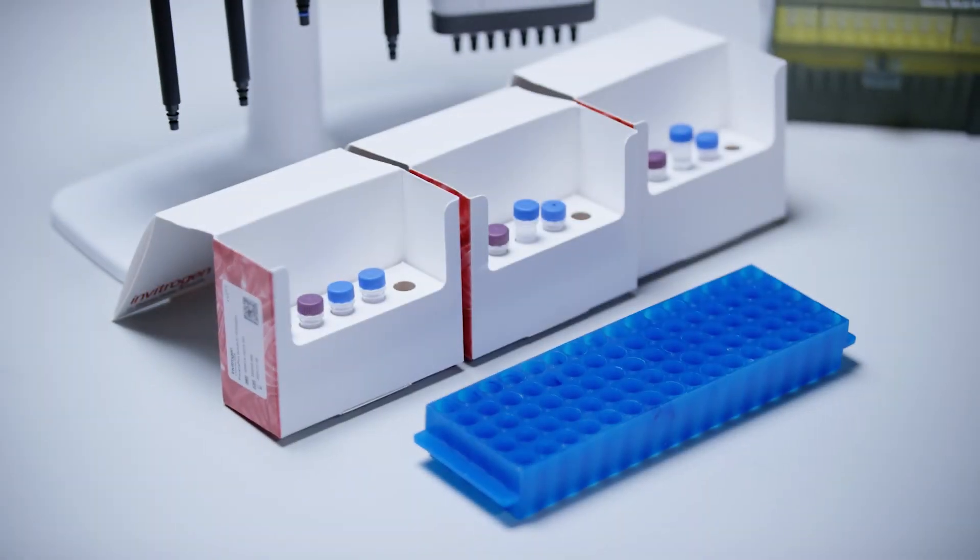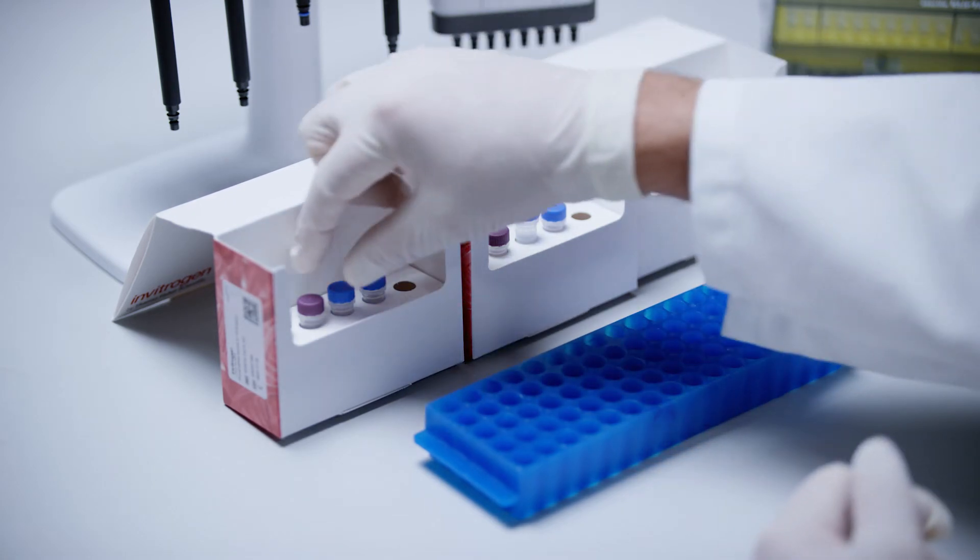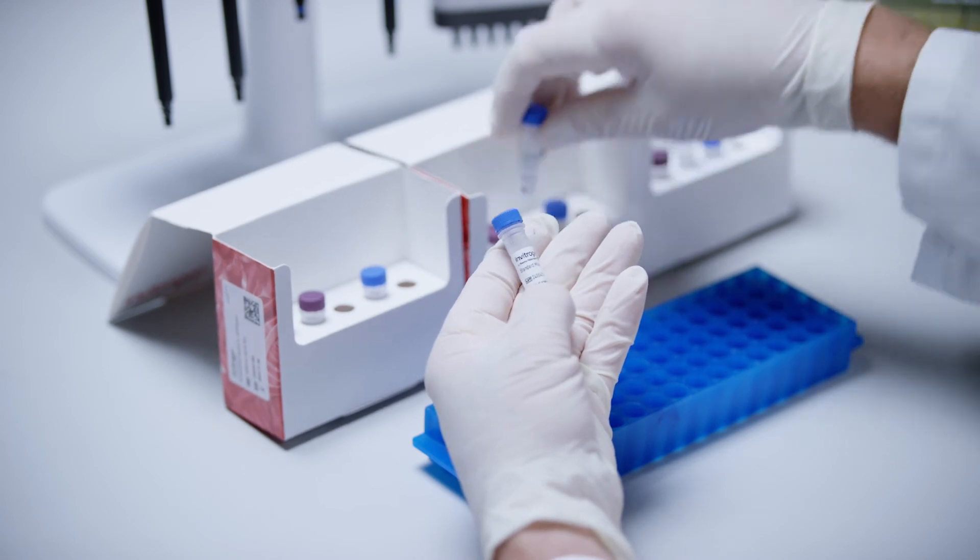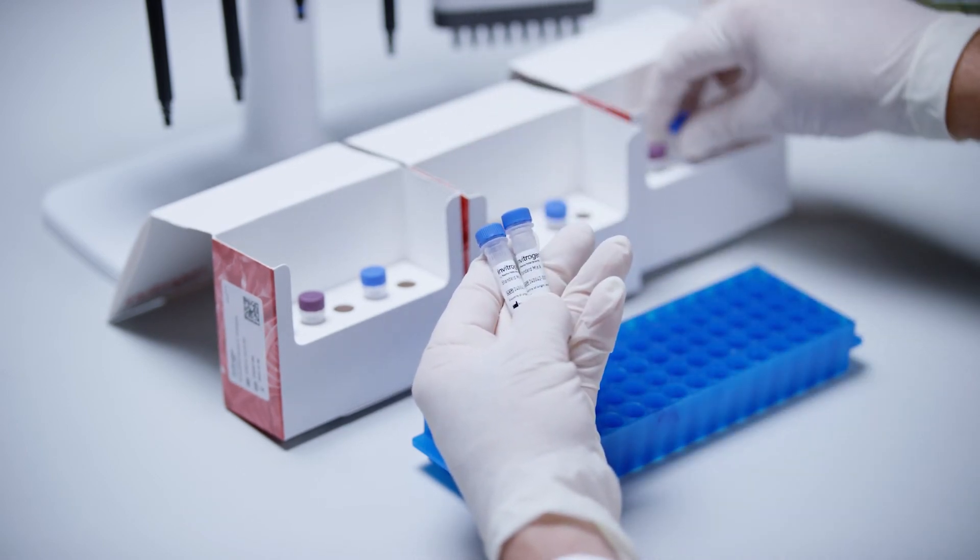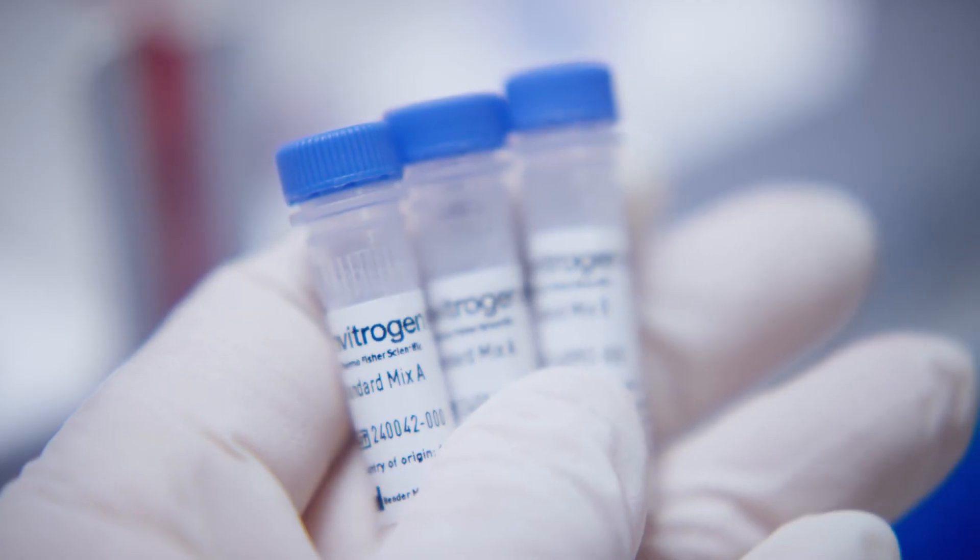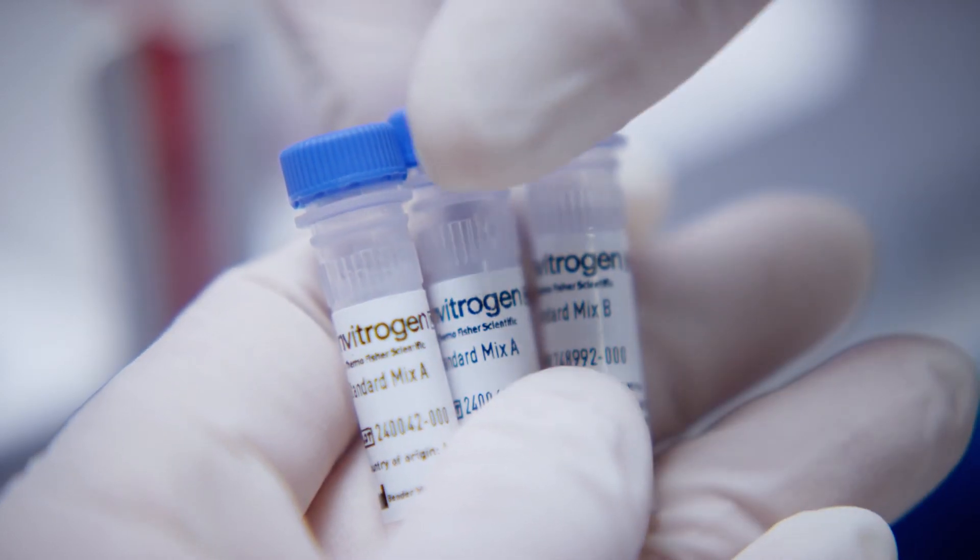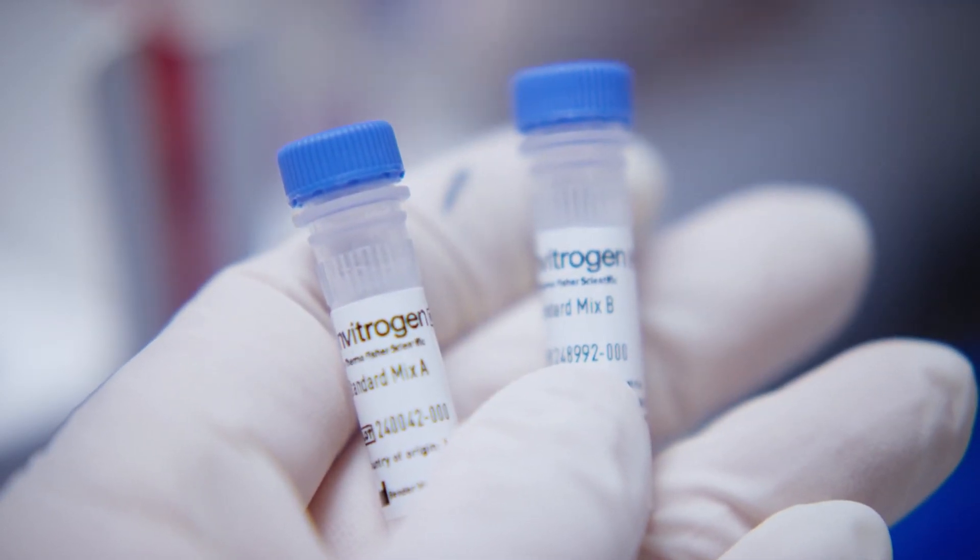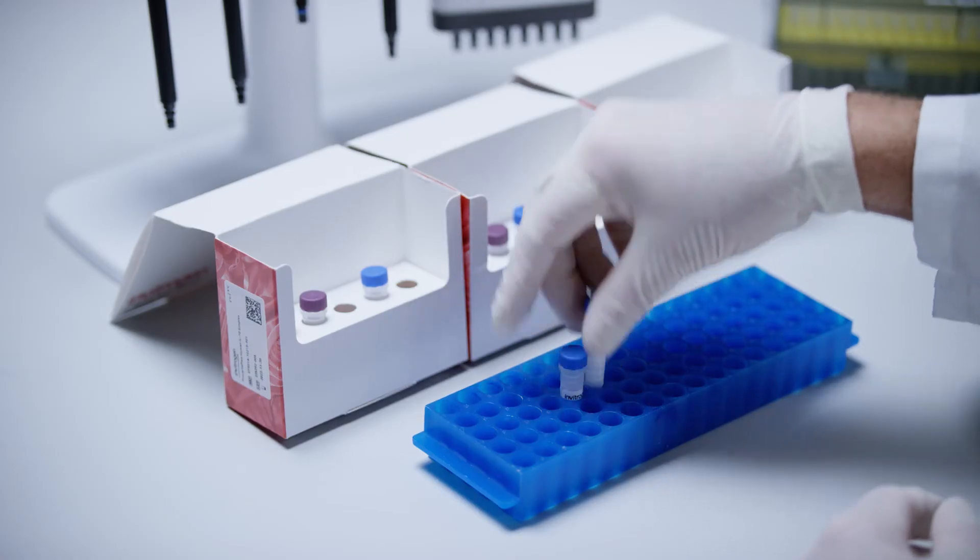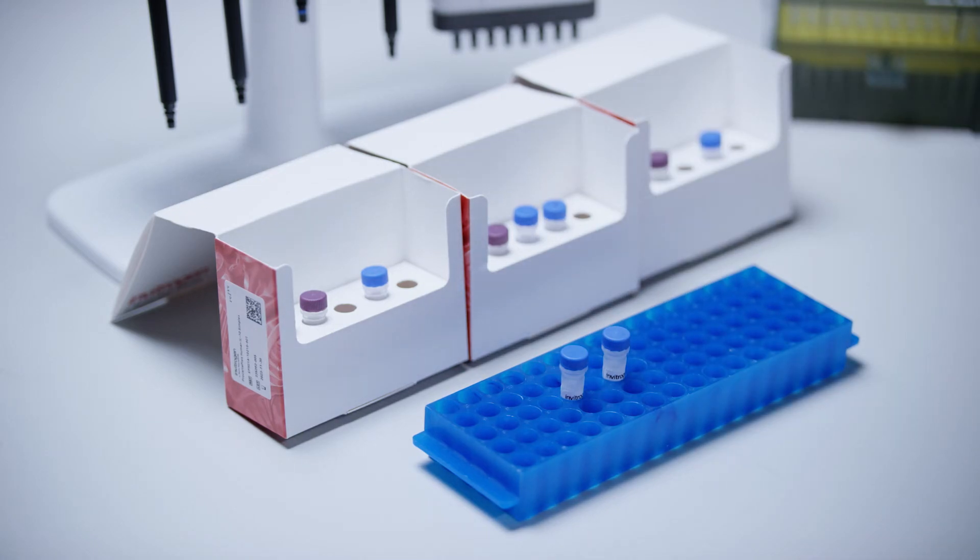In this example, we have three ProCartaPlex simplex kits. Two kits have standard mix A with different lots included and the third has standard mix B. Only one vial of each antigen standard, no matter which lot, is necessary to prepare the complete standard curve. For this run, we need one standard vial from standard mix A and one standard vial of standard mix B. All the other vials will not be needed for this run and can be stored for further use. You can use whichever lot you want. Write the lot of the used standards down as you'll need it for calculating the results.